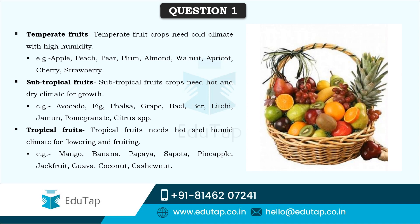Subtropical crops are those that need hot and dry climate for growth. They include ber, pomegranate, jamun, avocado, fig, falsa, lychee, and citrus. Temperate fruit crops need cold climate with high humidity, like apples, peaches, and pears — grown in Jammu, Kashmir, and Himachal Pradesh. Tropical fruits need hot and humid climate, like mango, banana, papaya, sapota, pineapple, jackfruit, guava, coconut, and cashew nut.